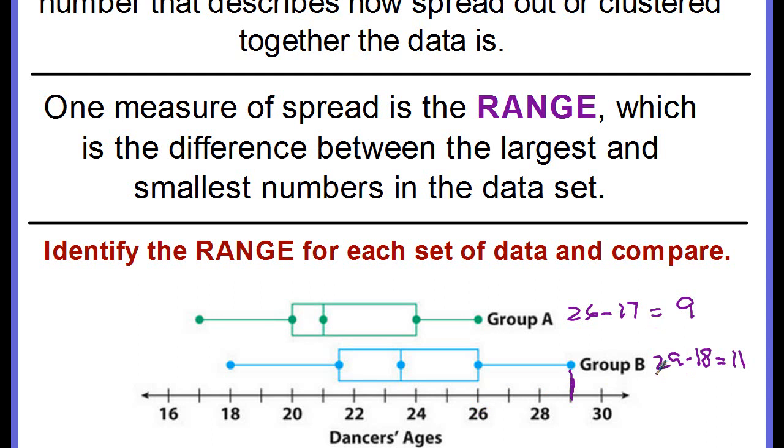Let's compare the two. The range for group B is larger than the range for group A, that means the data is a little bit more spread out.